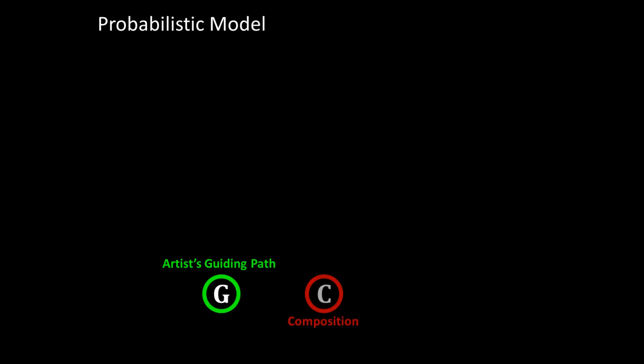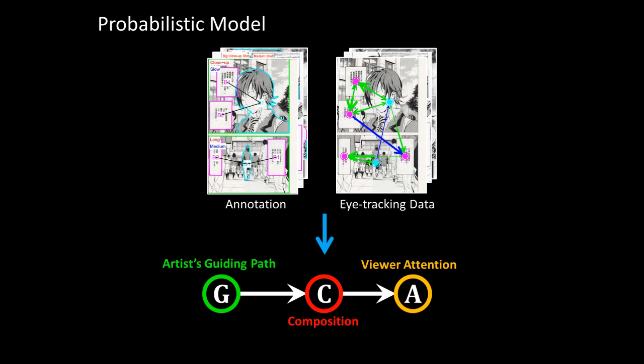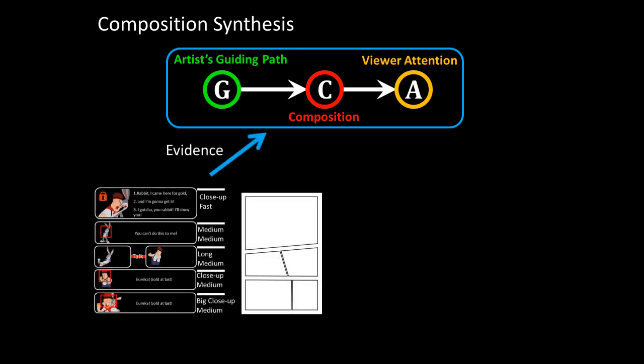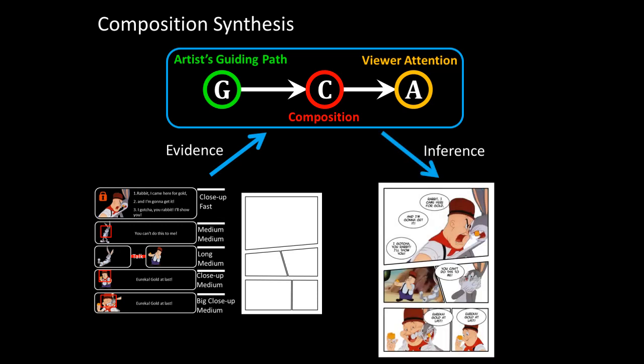Our core contribution is a probabilistic graphical model, which connects the artist's guiding path, composition, and viewer attention in a single probabilistic network. The model is trained on a set of manga pages which are annotated and has eye-tracking data from multiple viewers. The trained model is used for subject and balloon composition. Given input elements and an automatically generated layout, a composition synthesis is generated by performing probabilistic inference using the model.